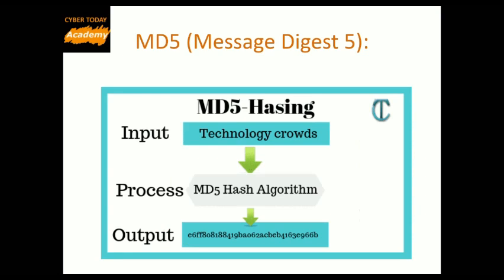MD5 was designed by Ronald Rivest in 1991 to replace an earlier hash function MD4, and was specified in 1992 as RFC 1321. MD5 is a 128-bit fixed-length hash. A flaw was found making it possible to produce collisions in a reasonable amount of time, but it is still widely used.